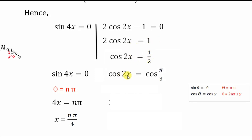cos 2x = 1/2 is nothing but cos(π/3). This is now in the standard form cos θ = cos y, for which the general solution is θ = 2nπ ± y. Here θ = 2x and y = π/3.